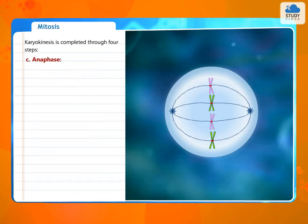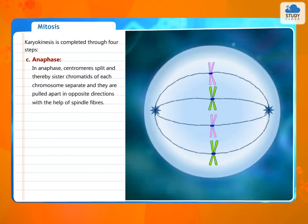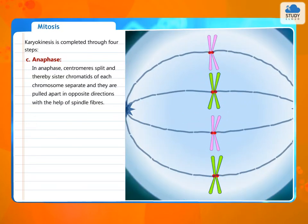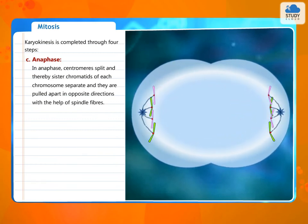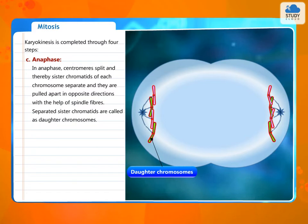C. Anaphase. In anaphase, centromeres split and thereby sister chromatids of each chromosome separate and they are pulled apart in opposite directions with the help of spindle fibres. Separated sister chromatids are called daughter chromosomes.